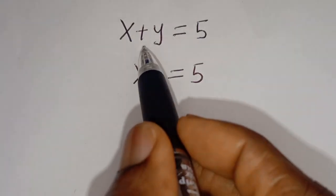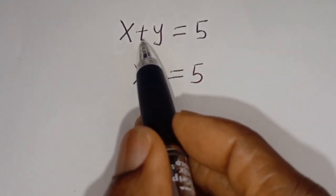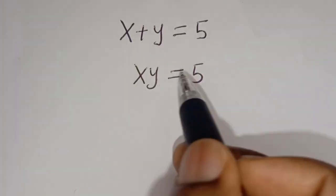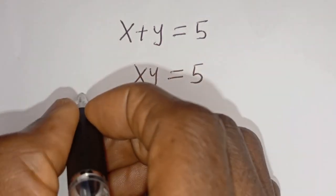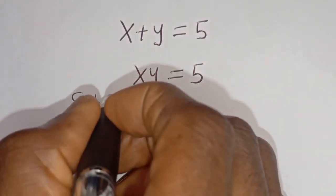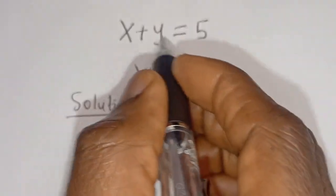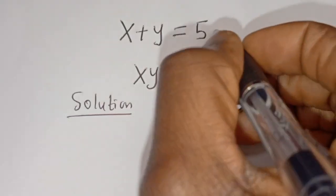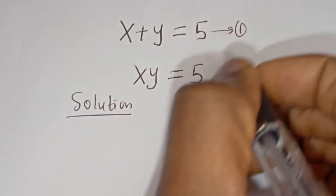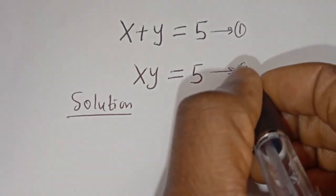Hello, how to solve for x and y in this equation: x plus y is equal to 5, and xy is equal to 5. Let's call x plus y equals 5 equation 1, and xy equals 5 equation 2.